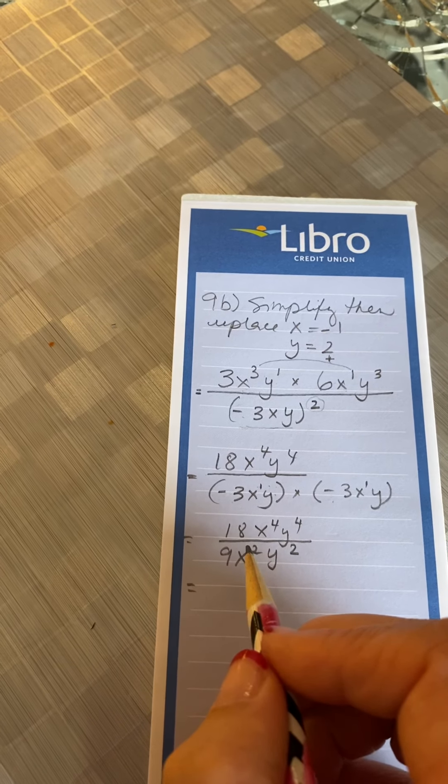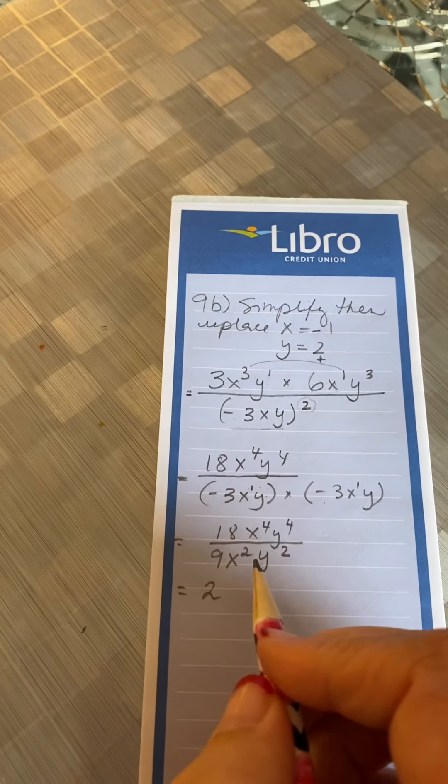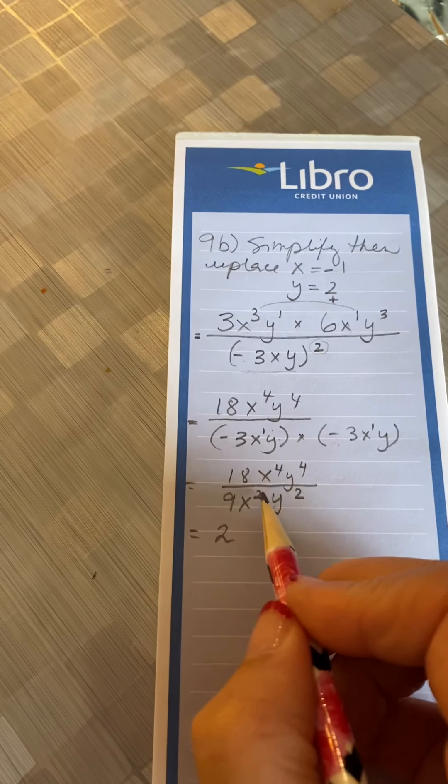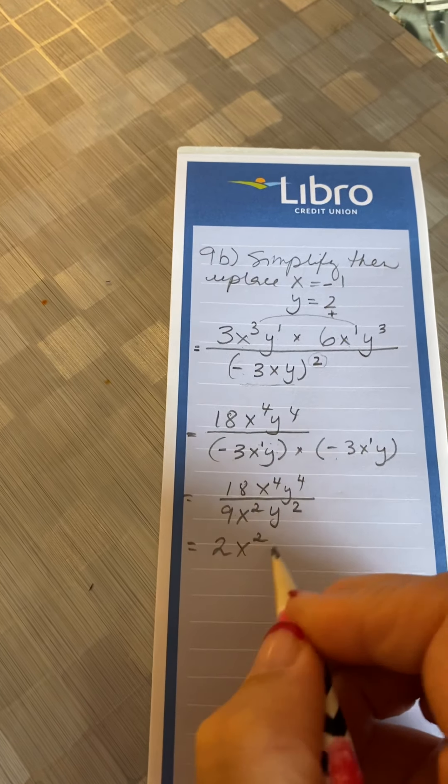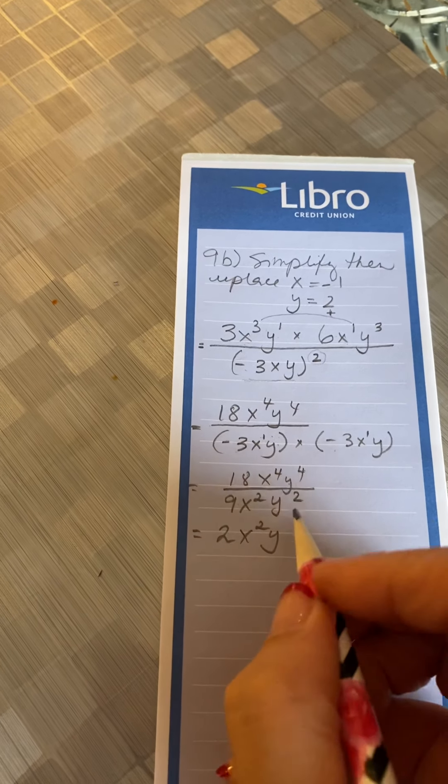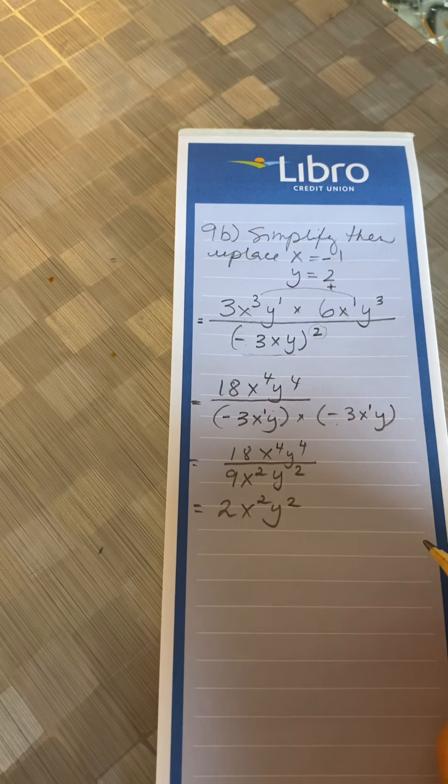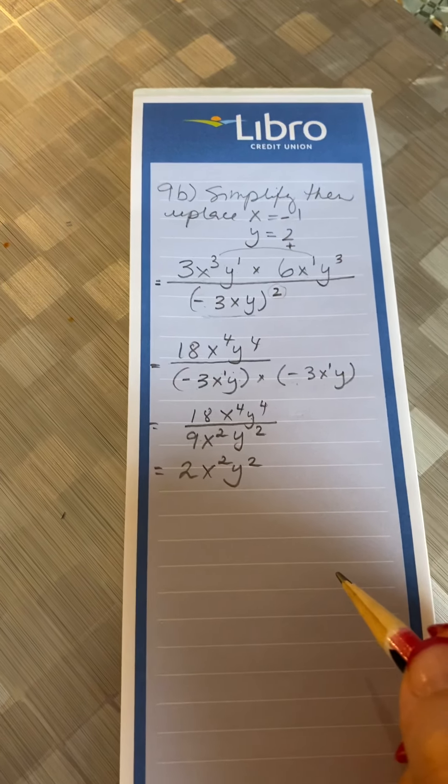Now I can divide the 18 by 9, which is 2, and I'm using the division rule, which says to subtract the exponents. So 4 minus 2 on the x's will give me squared, and for the y's, 4 minus 2 is also 2. So I'm left with 2x squared y squared as my simplified version.